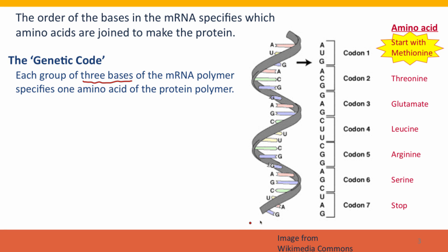Here we have part of a messenger RNA split into groups of three bases, which are the codons. Remember we used the term codon in the context of the start codon and the stop codon. The start codon always specifies the amino acid methionine. The stop codon doesn't specify any amino acid at all, and that's why translation stops at this point. Each of these codons corresponds to a particular amino acid: AUG with methionine, ACG with threonine, etc.